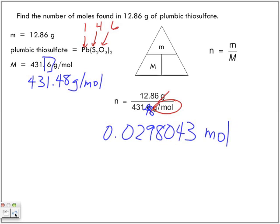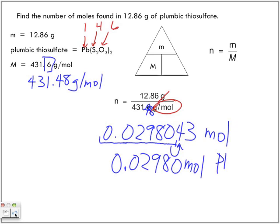So what is the least number of significant digits in my question? Four, right? Four of them. So this zero does not count here. Here's the first significant digit, the nine, the eight, and this zero is what we need. We look at this number here. Does it change it? No. Do I keep this zero? Yes, I do. So I get 0.02980 moles of plumbic thiosulfate.